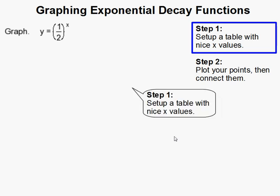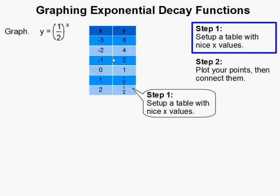Nice x values are small integers where it's very easy to calculate values. So here's my values here: negative 3, negative 2, negative 1, 0, 1, 2.